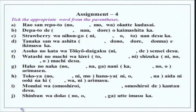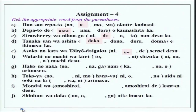This is about particles — let us see which particle to use where. Rao-san, repoto wo okutte kudasai — please send. Depato de nani wo kaimashita ka? Please note it is nani here and not nani-o; none is used with numbers most of the time. Strawberry wa nihongo de nan desu ka? — 'de' as in 'in.' Tanaka-san wa ashita doko e ikimasu ka? Dono, dore for choice, and donna meaning 'which type of.' Asoko no kata wa Tokyo Daigaku no sensei desu — of Tokyo Daigaku. Watashi no machi wa kirei de shizuka na machi desu — joining two na-adjectives.